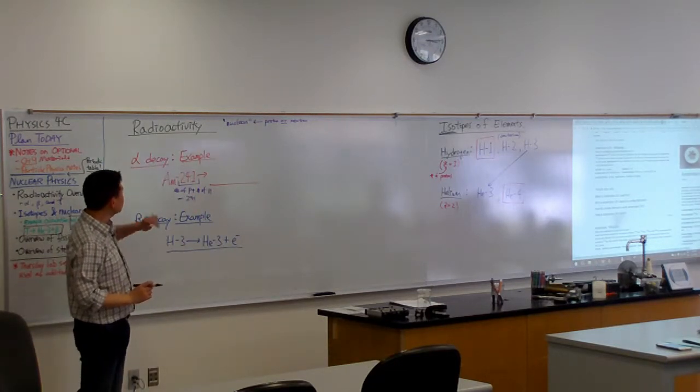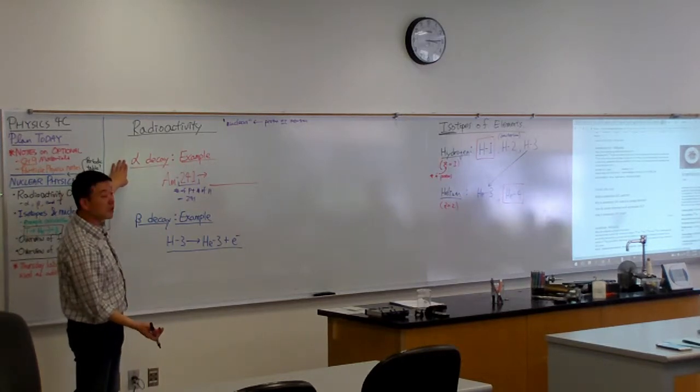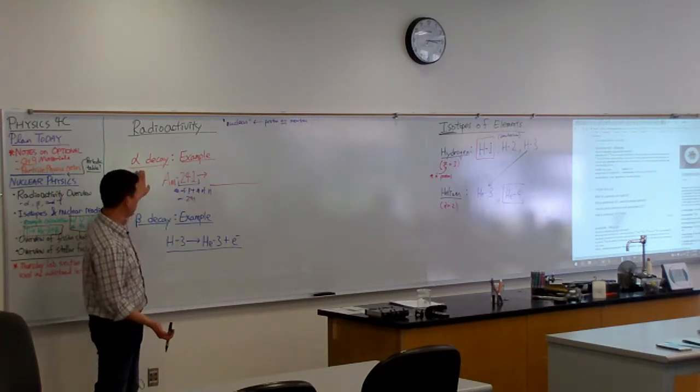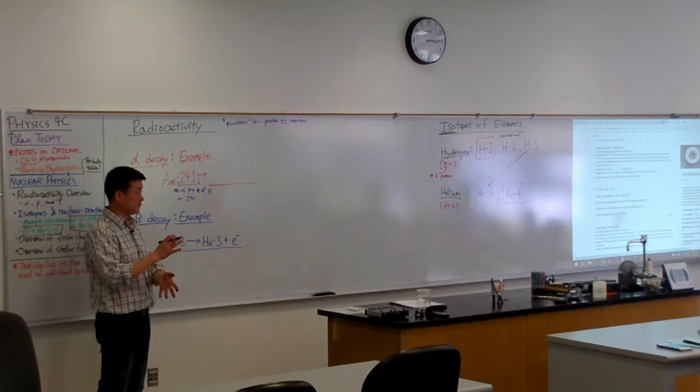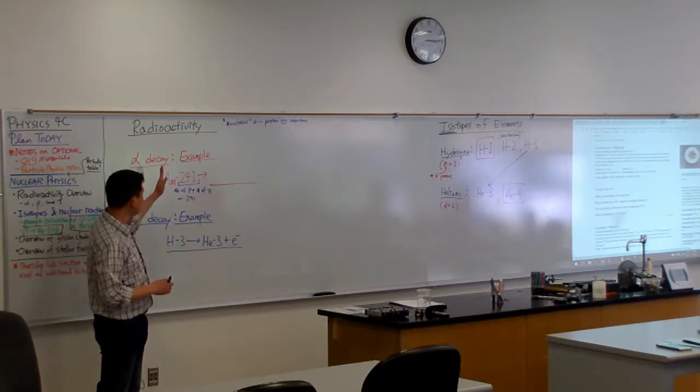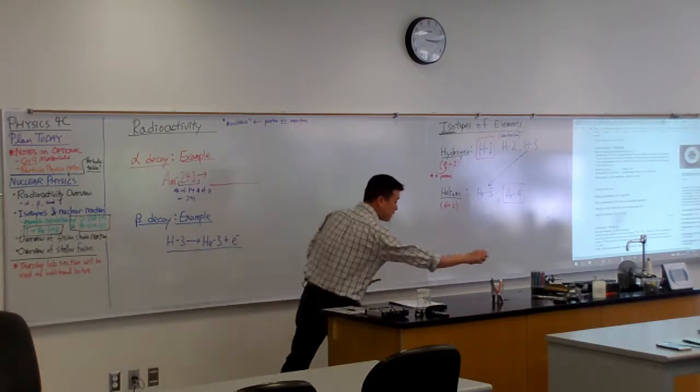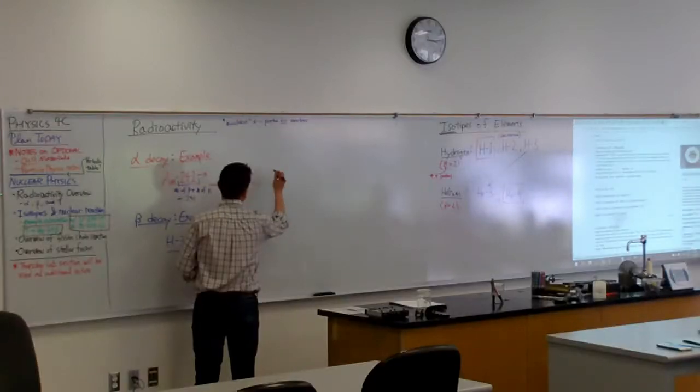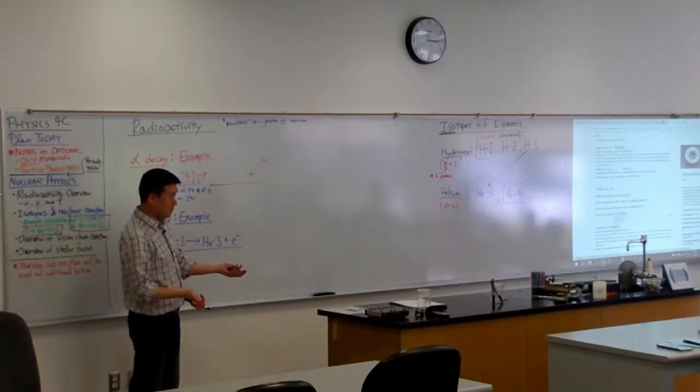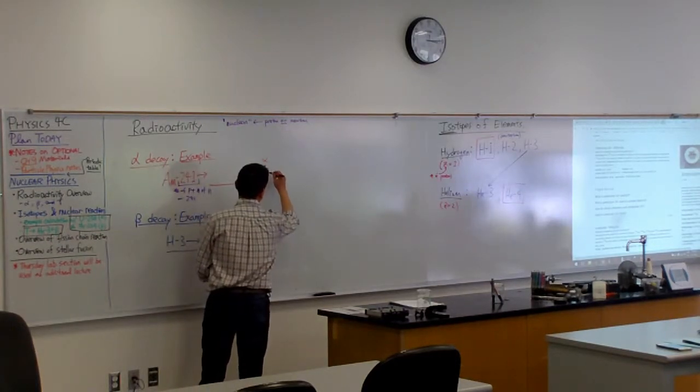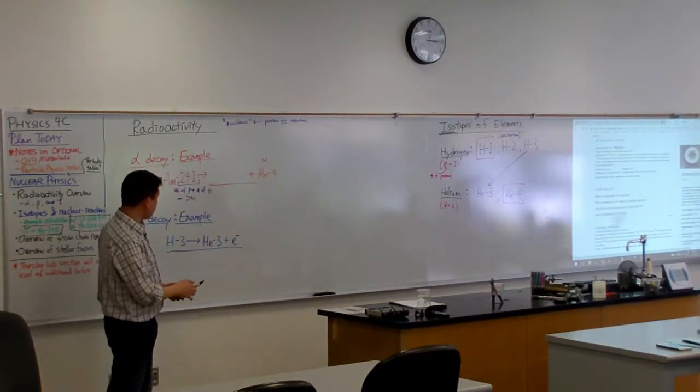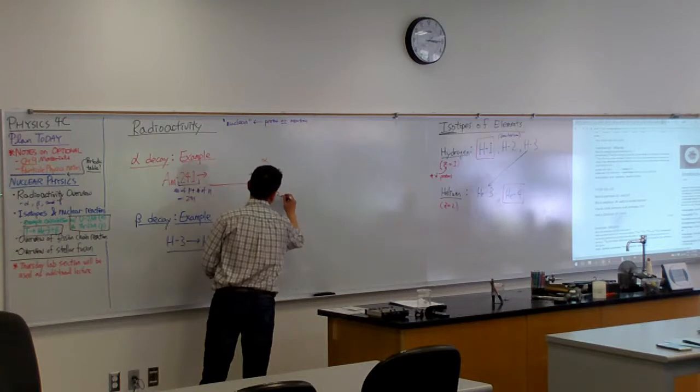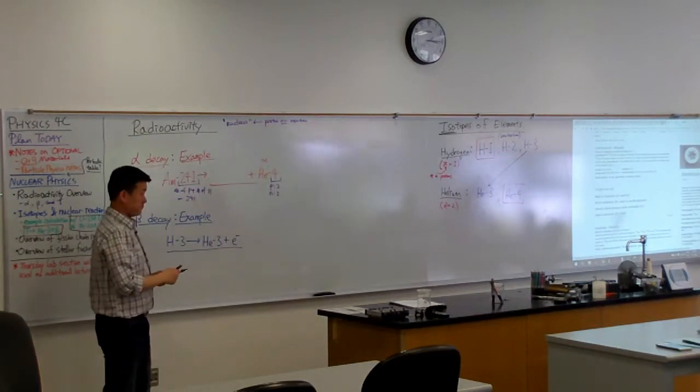Now, in the alpha decay, I think I need to tell you this. The number of protons or number of neutrons, they don't change. In an alpha decay, all that happens is these just get rearranged. So that means in an Americium 241 alpha decay, you know one thing. You know it emits an alpha particle, right?